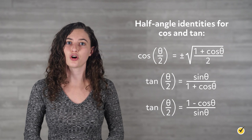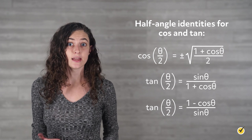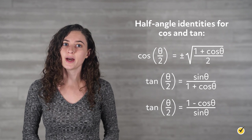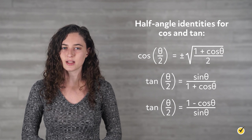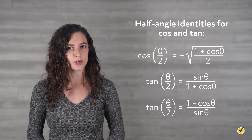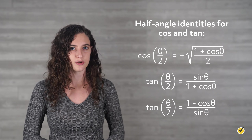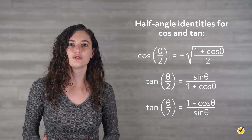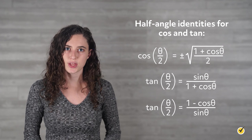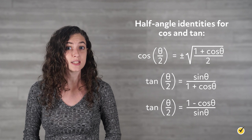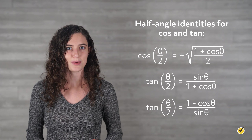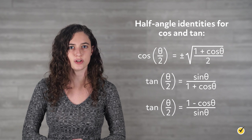As it turns out, we have half angle identities for cosine and tangent as well. In fact, tangent has 2. Let's go ahead and use one of the tangent half angle identities to find the tangent of 22.5 degrees. Since 22.5 is half of 45, we can use 45 for theta. It doesn't matter which of the tangent half angle identities we choose — we'll get the same answer either way. Let's go with the first one.